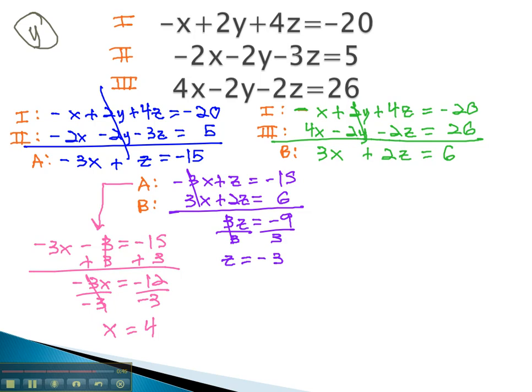Once we've solved the two equations with two variables, we go back to either original equation. Let's use equation number 2 to find out what the remaining variable is. Equation number 2 was negative 2x, which is 4, minus 2y minus 3z, which we just found out was negative 3, equals 5.